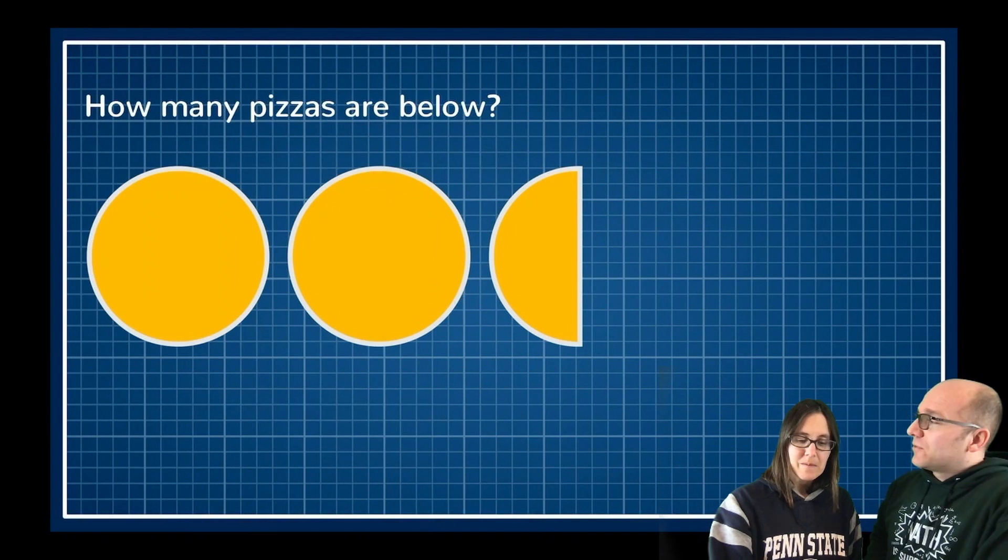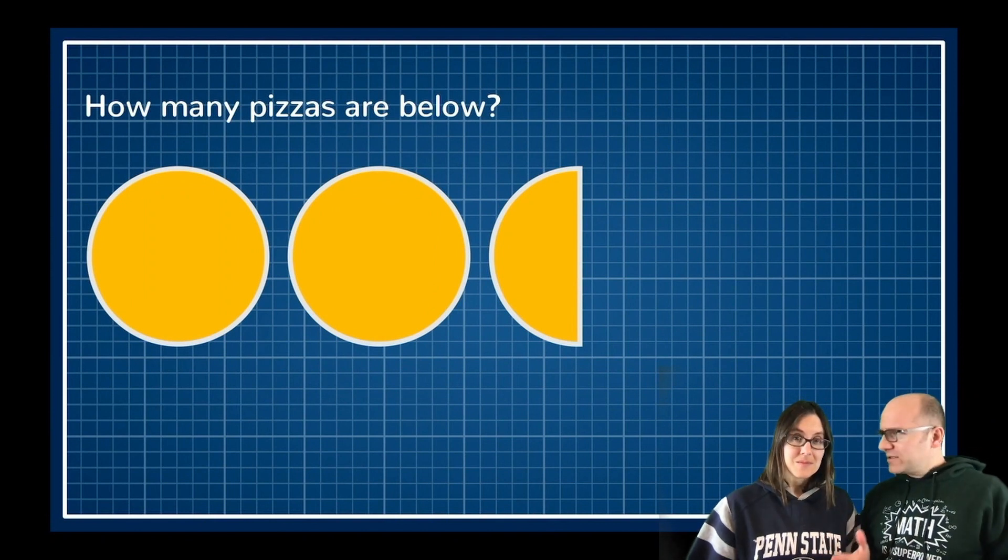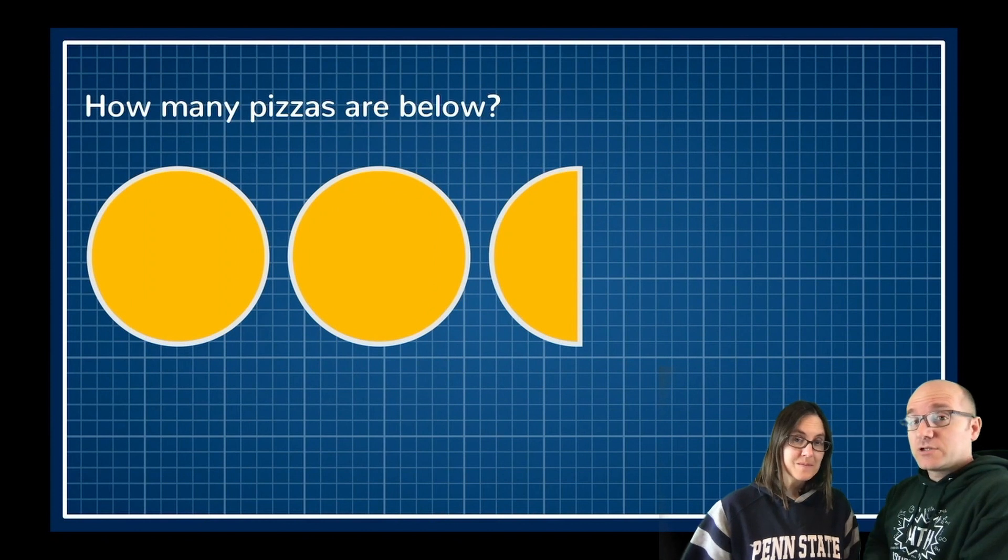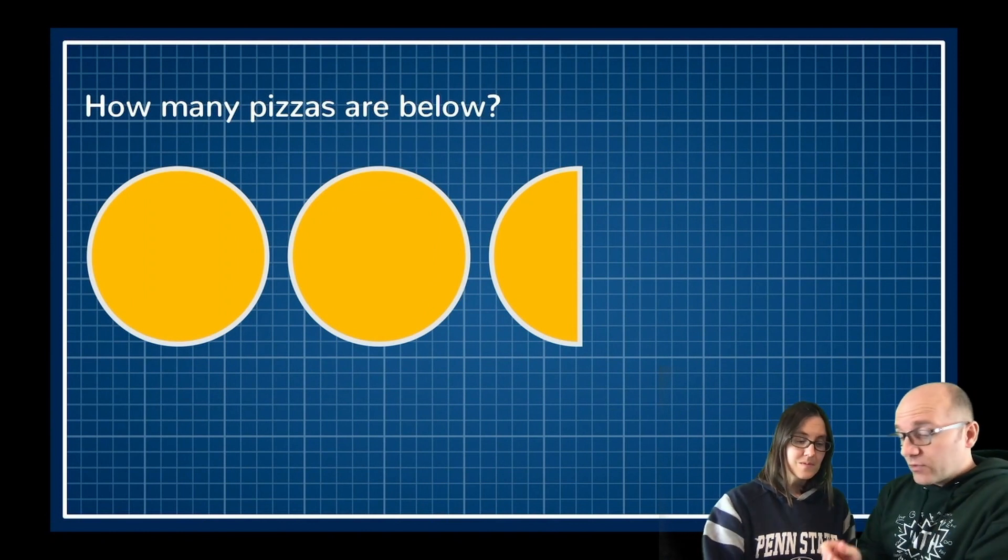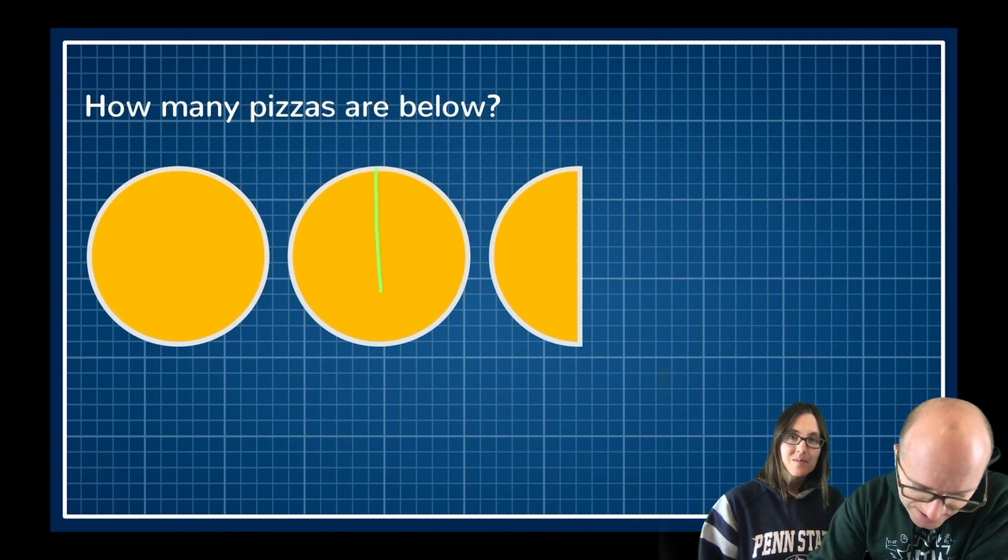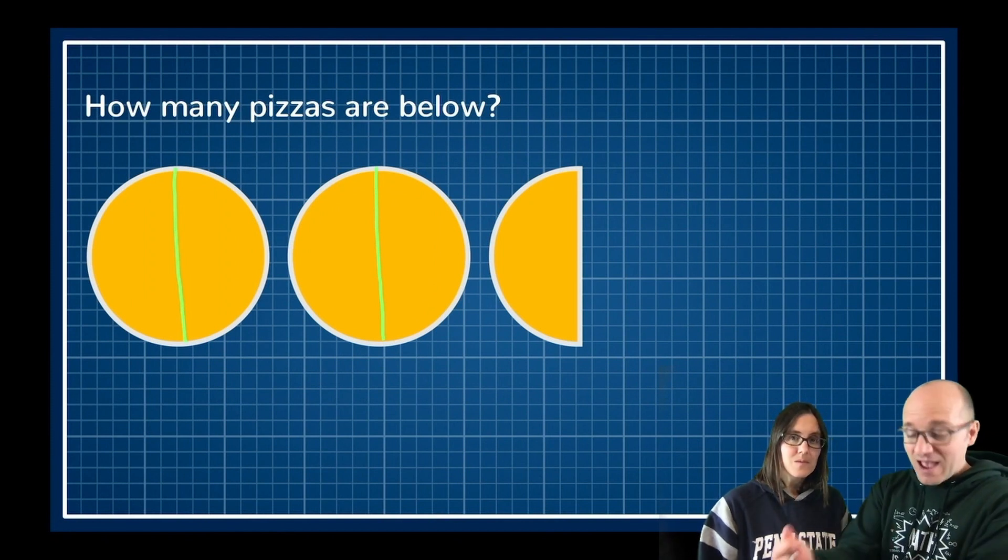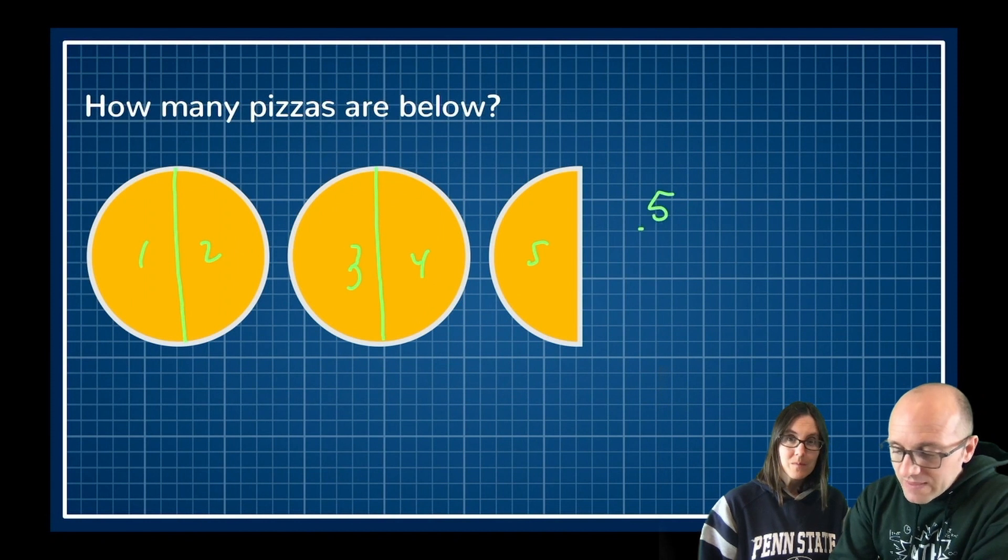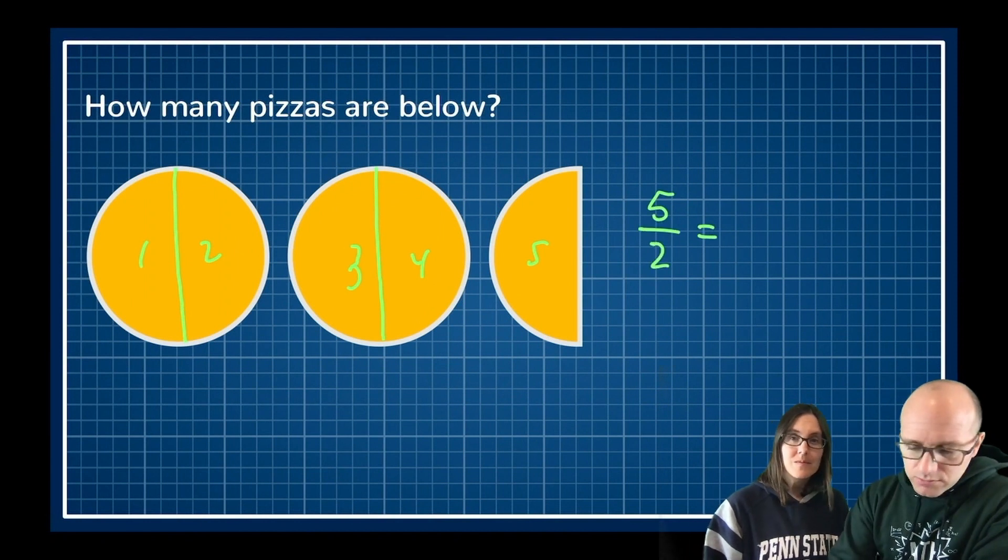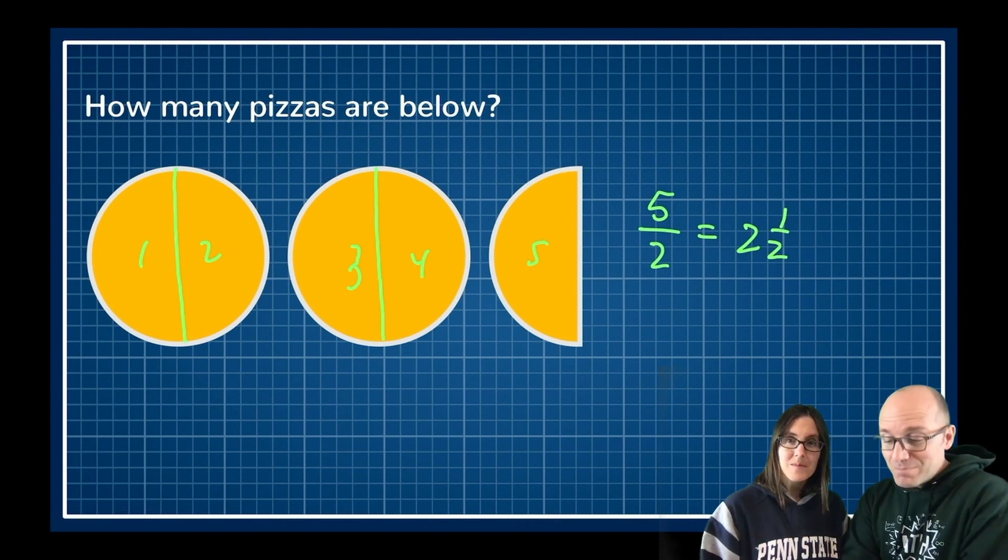How many pizzas are below? Well, we have two whole pizzas and then we have part of a pizza and that looks like a half to me. So I'm going to say two and a half pizzas. There were two pizzas and half of a pizza. So all together, two and a half. Or there's another way of looking at this problem. We could slice these guys in half so that now we have halves of pizzas. How many halves of pizzas do we have? There are five in total. One, two, three, four, and five. So we could write that as five halves of a pizza or two and a half. And it's the same. Those two numbers are exactly the same.